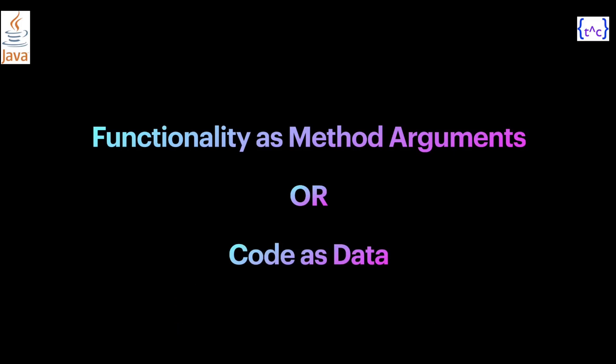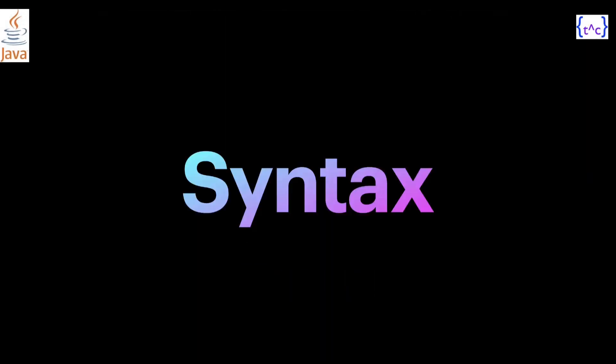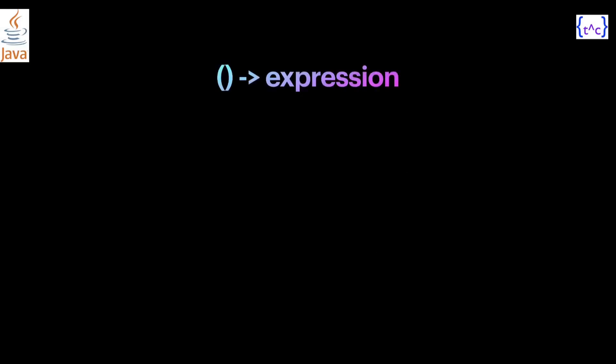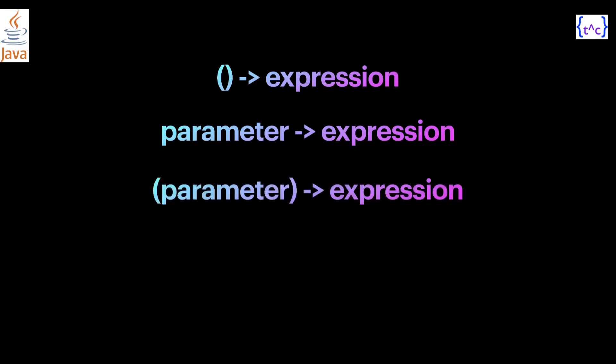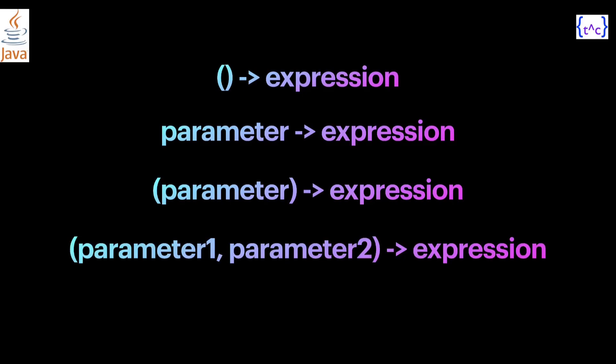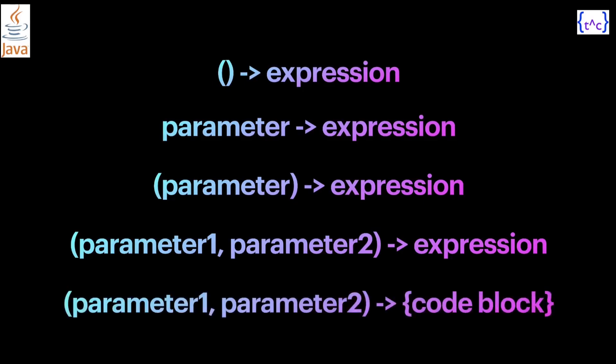The detailed explanation of these points I will be demonstrating in a while. Prior to the demonstration I will show you the syntax. The first variation is just empty parentheses with an expression — meaning the method has no arguments. If there is one argument, the parameter points to an expression, with or without parentheses. If there is more than one parameter, parameter one and parameter two separated by a comma point to an expression, enclosed in parentheses.